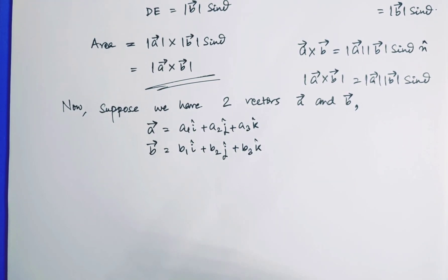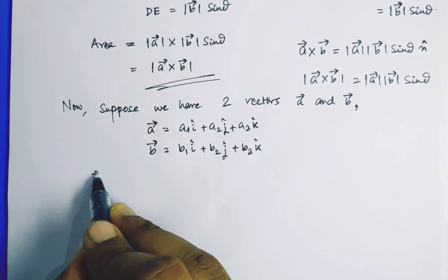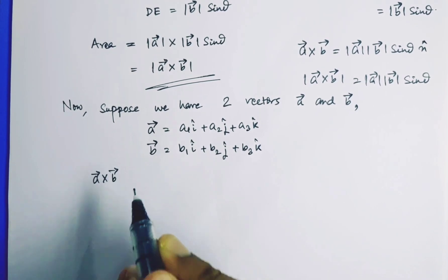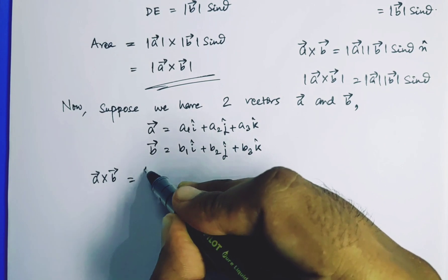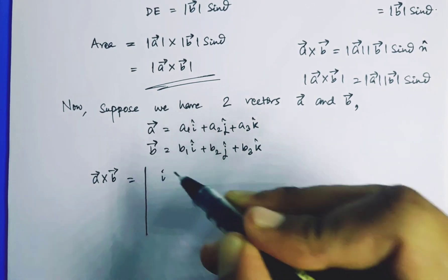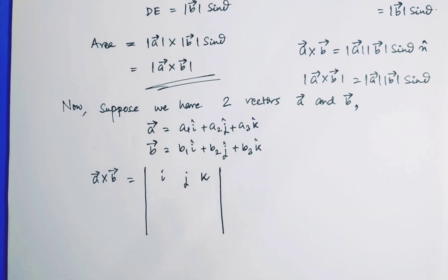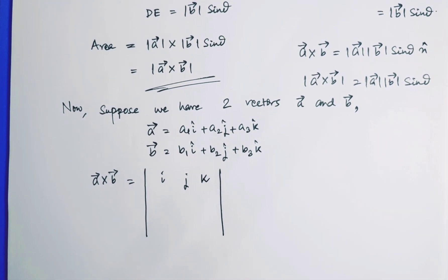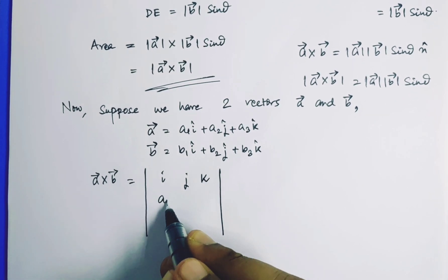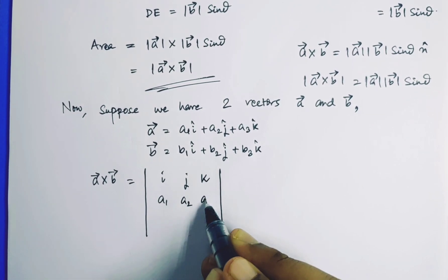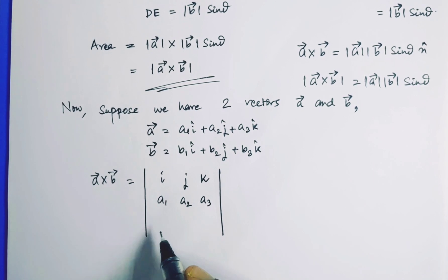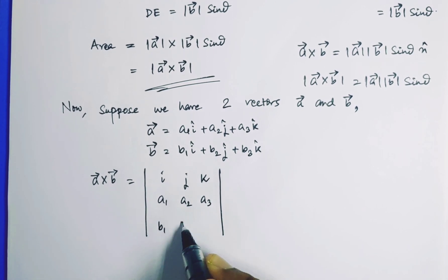Now if I have to do cross product of A and B, so A cross B will be expressed as i, j, k. Have you seen this one before? Determinants. Now here it will be A1, A2, A3. Then here it will be B1, B2, B3.